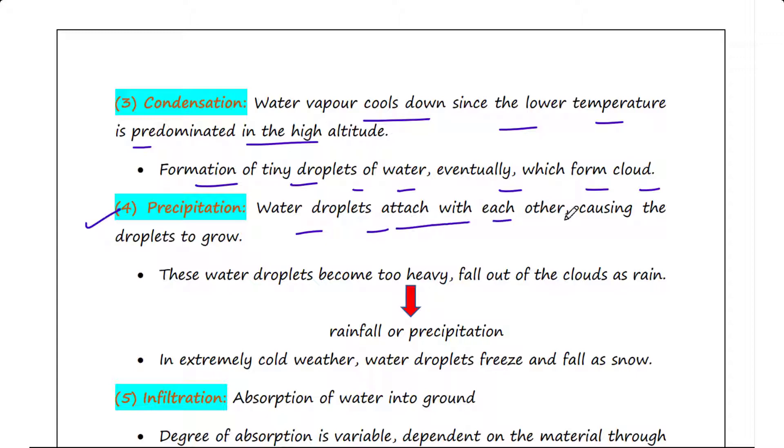Next step is precipitation. Within a cloud, water droplets attach with each other, causing the droplets to grow. When these water droplets become too heavy to stay suspended in the cloud, they fall out of the clouds as rain. This process is called rainfall or precipitation.